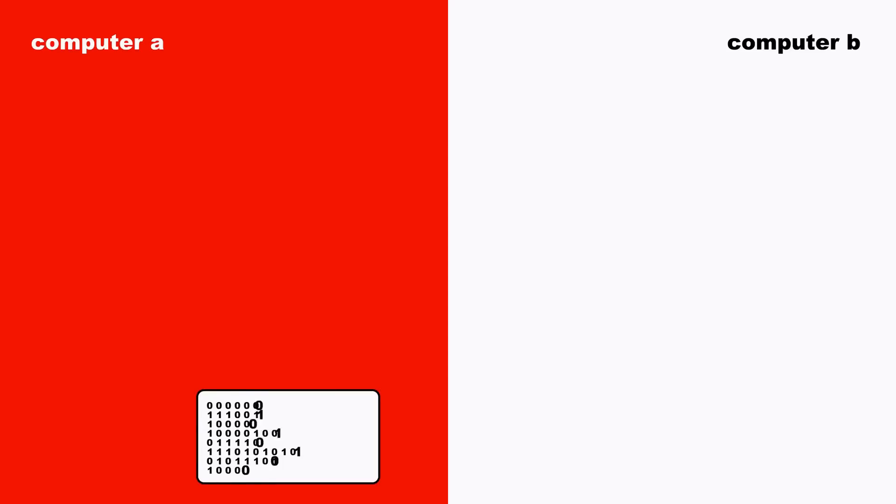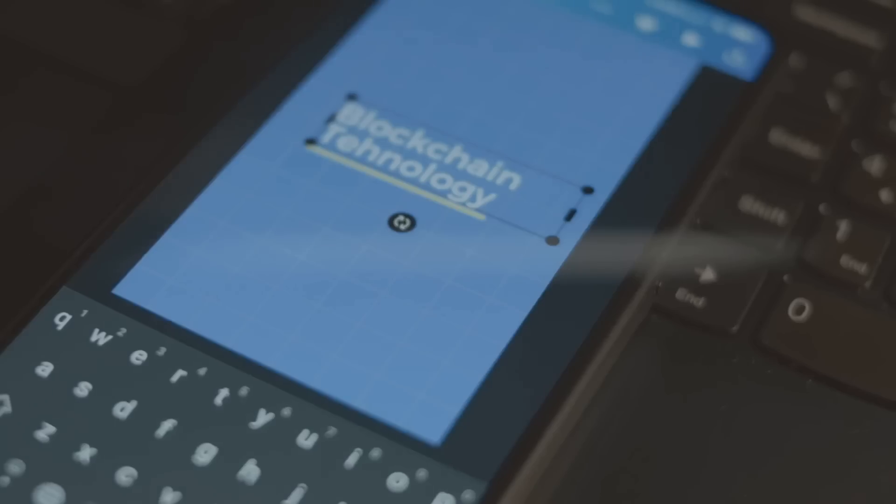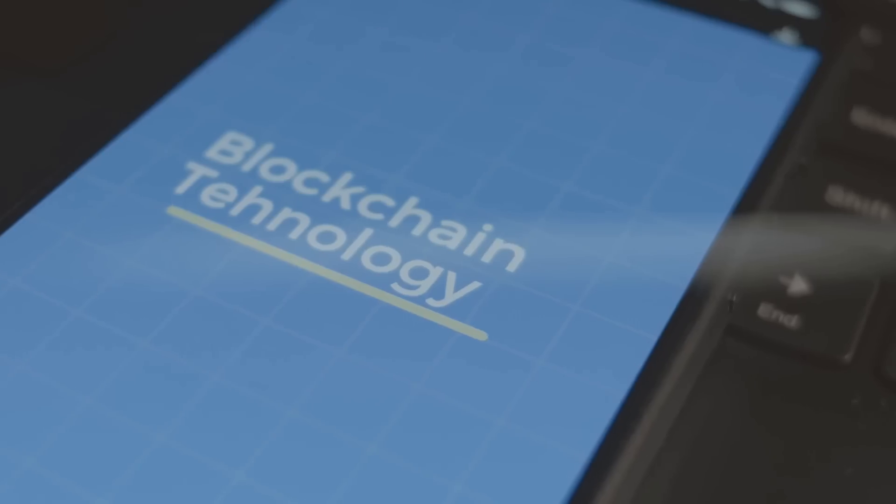That's basically blockchain, a fancy digital notebook that everyone can see but no one can mess with. It's a way to keep records, like who owns bitcoin or who sent money to whom, safe and tamper-proof.